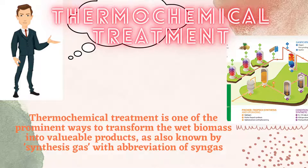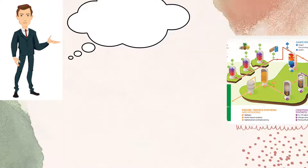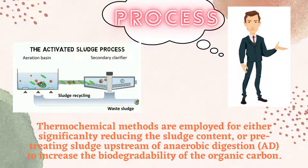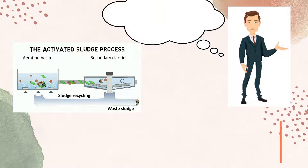Thermochemical treatment is one of the prominent ways to transform wet pond waste into a valuable product, also known as synthesis gas, with the evolution of biogas. Thermochemical methods are applied for either significantly reducing the solid content or pre-treating upstream of anaerobic digestion to increase the biodegradability of the organic carbon.